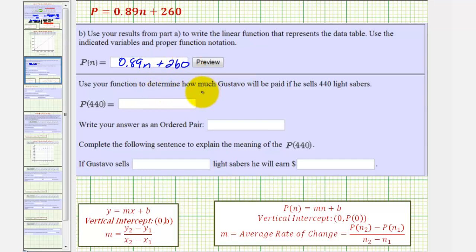Next, we're asked to use the function to determine how much Gustavo will be paid if he sells 440 lightsabers, which means we want to find p(440). So we'll substitute 440 for n. p(440) equals 0.89 times 440 plus 260. This would be 391.6 plus 260, which comes out to 651.6.